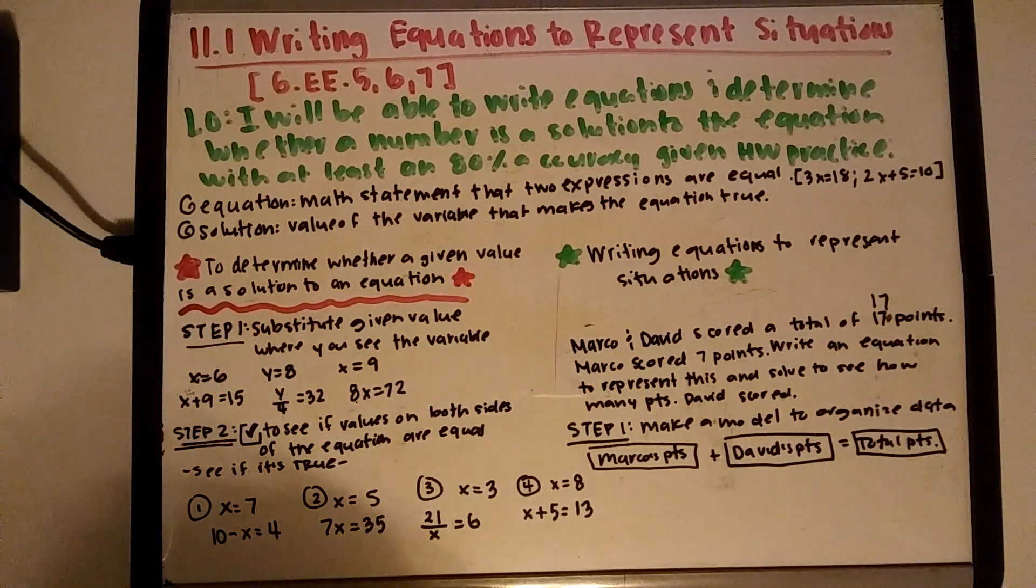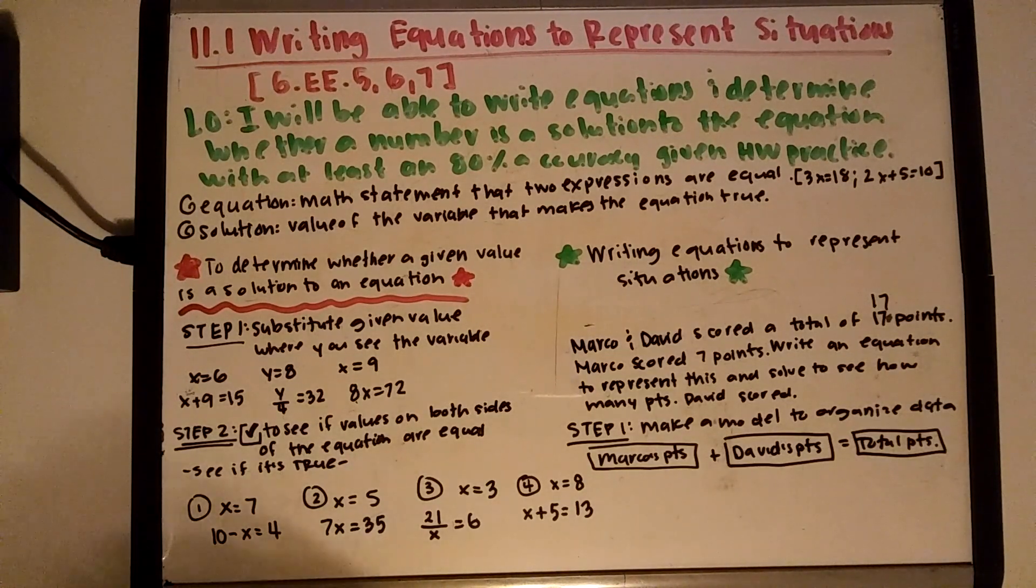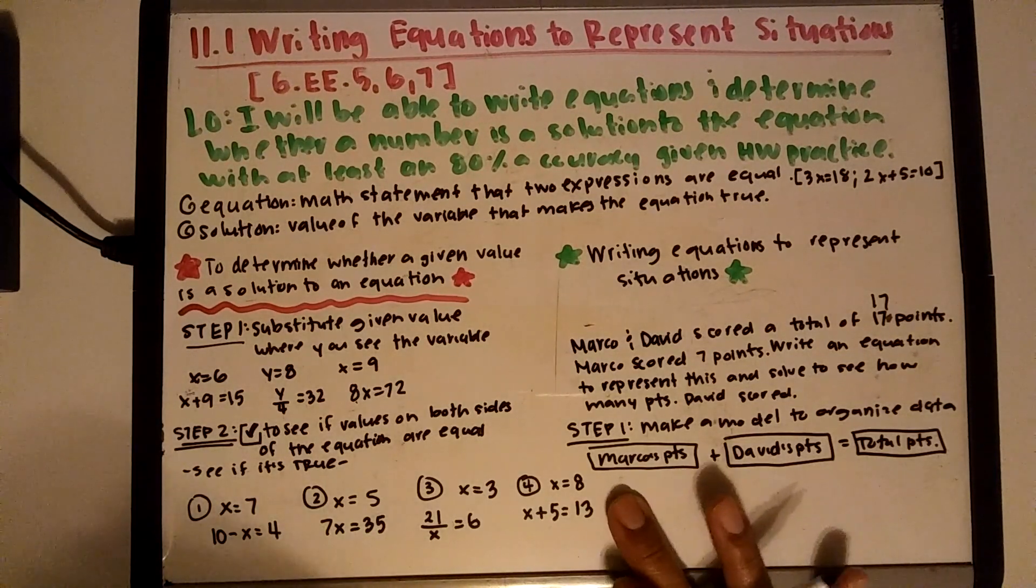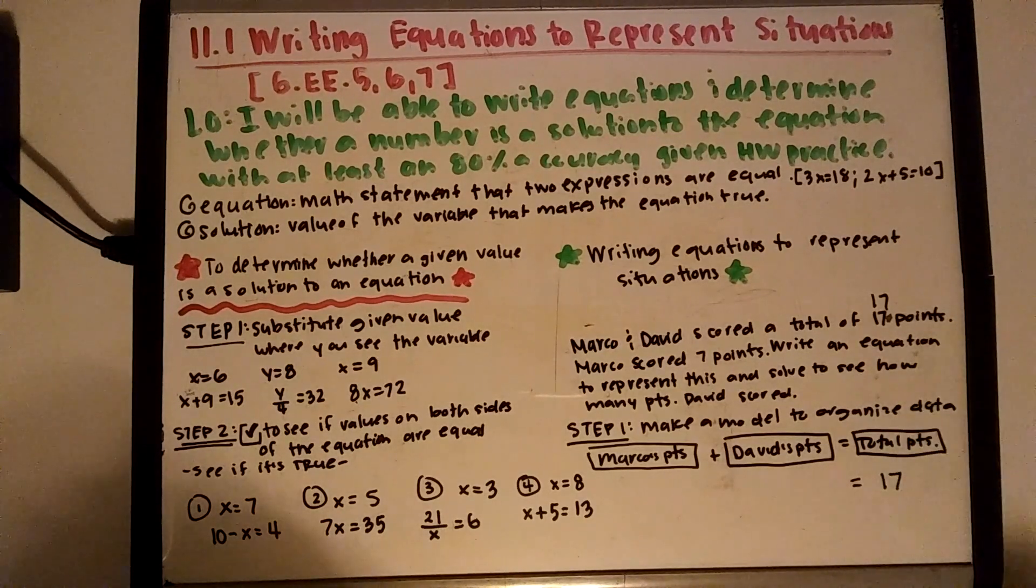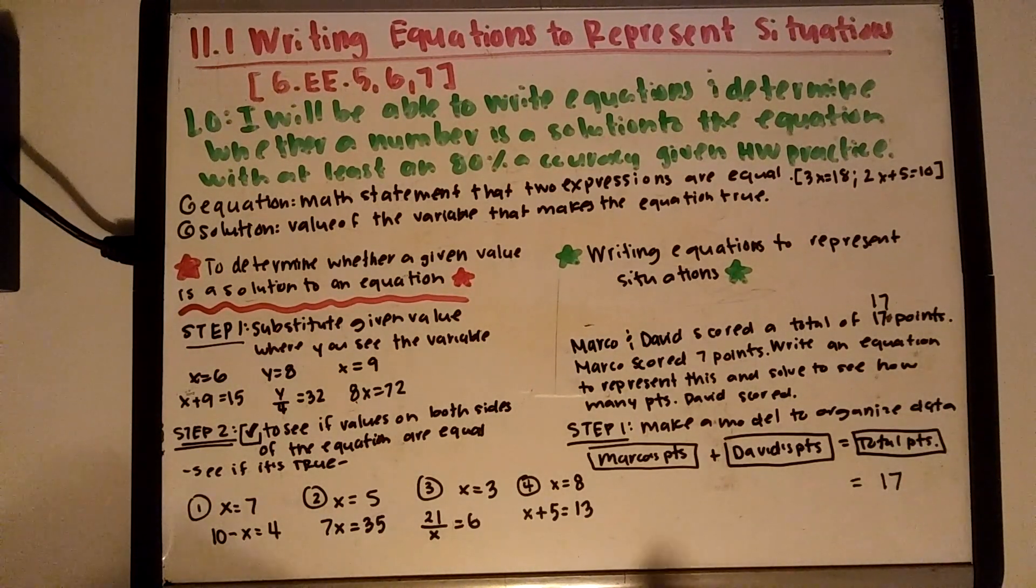So the first thing you're going to do is make a model to organize the data, and while you do that, then you can start plugging numbers. So we know that in total they score 17, so I'm going to write that there. And total means addition, right? So that's what I'm using addition there.